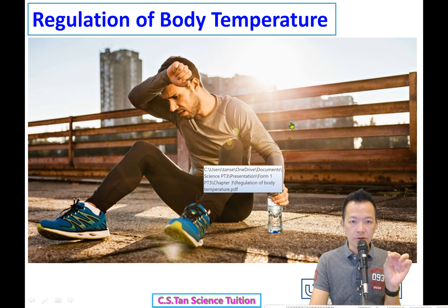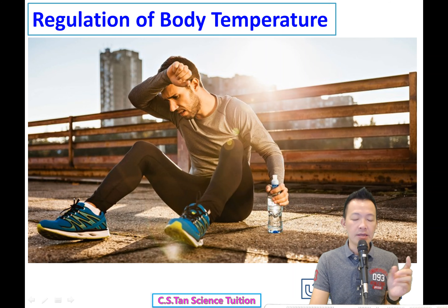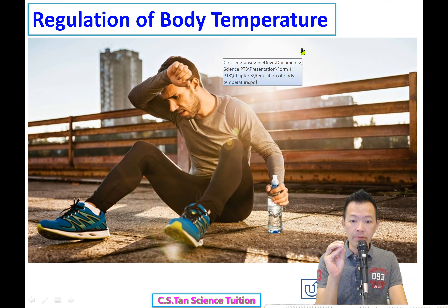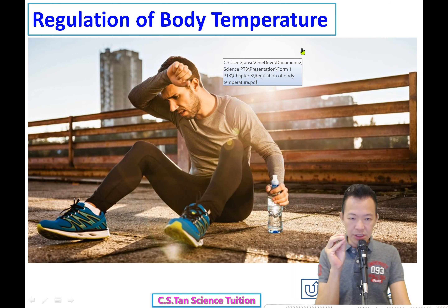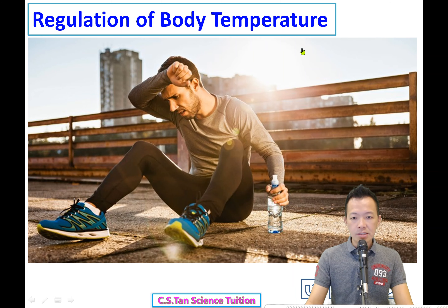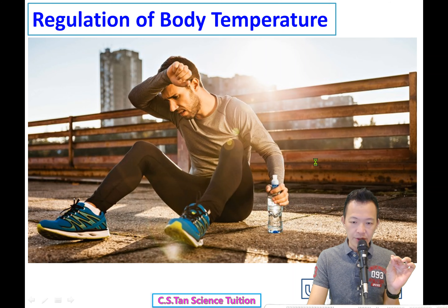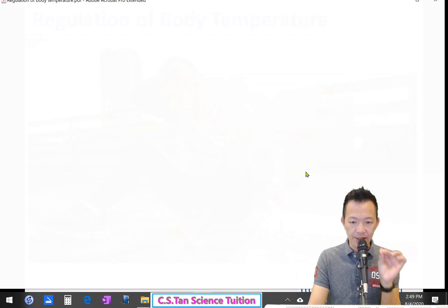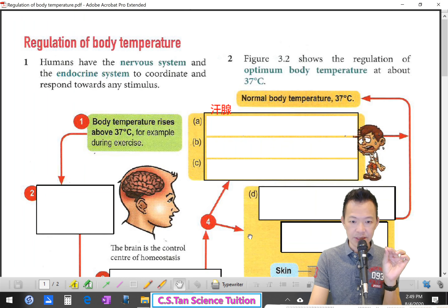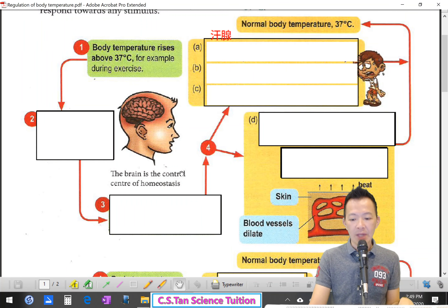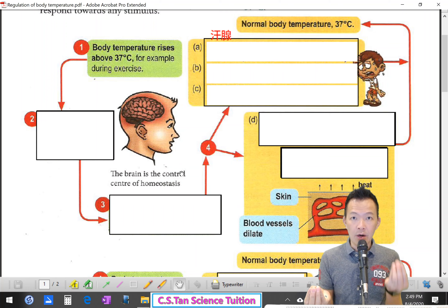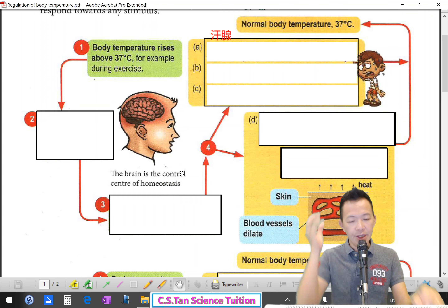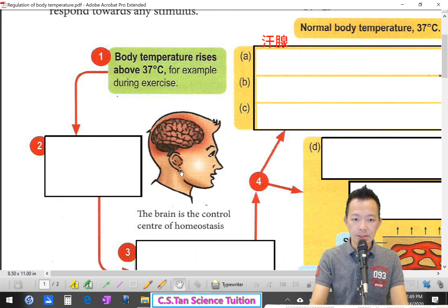So the first example, we're going to talk a lot (要讲了很多很多的). It's the regulation of body temperature — how you maintain your body temperature (你怎样保持你的体温呢). So, control of body temperature is one of the examples of homeostasis (体内平衡的其中一种 example).